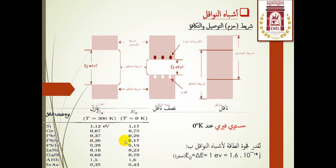طاقة فجوة الحظر للسيليسيوم تساوي 1.12 إلكترون فولت، وهي طاقة بسيطة جدا. فمثلا، إذا كان حمل قلم يحتاج إلى 1 جول، فهنا نحتاج فقط إلى 1.6 × 10^-19 جول، أي طاقة ضعيفة جدا.